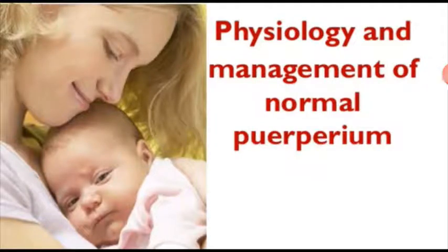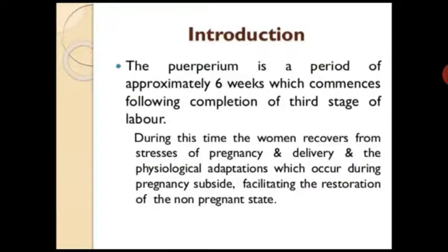Hello students, today we will start a new topic: physiology and management of normal puerperium. Puerperium is the period of approximately six weeks which commences following completion of the third stage of labor. It refers to the condition after childbirth in which body tissues, mainly the pelvic organs, return anatomically and physiologically back to the non-pregnant, pre-pregnant state. During this time the woman recovers from the stresses of pregnancy and delivery, and the physiologic adaptations which occurred during pregnancy subside, facilitating the restoration of the non-pregnant state.